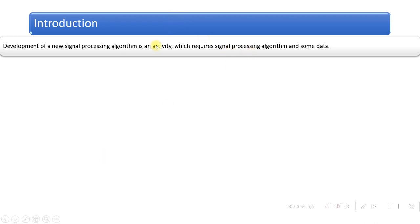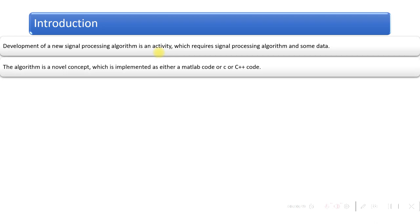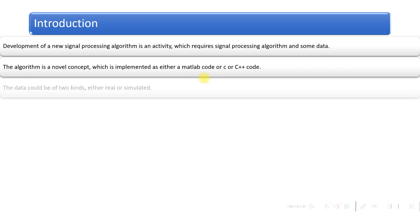Development of a new signal processing algorithm is an activity which requires a signal processing algorithm and some data. The algorithm is a novel concept — whatever algorithm we design using these signal processing methodologies is a completely new concept, implemented either as a MATLAB code or C or C++ code.